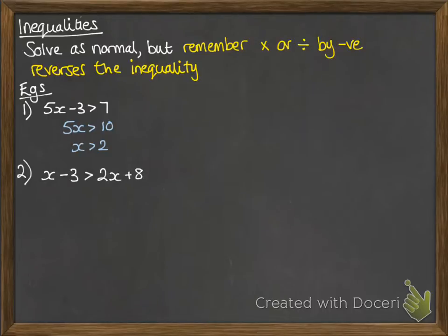x minus 3 is greater than 2x plus 8. So next we're going to add 3 to both sides. x is greater than 2x plus 11. Now we are taking off that 2x, so we get minus x is greater than 11.